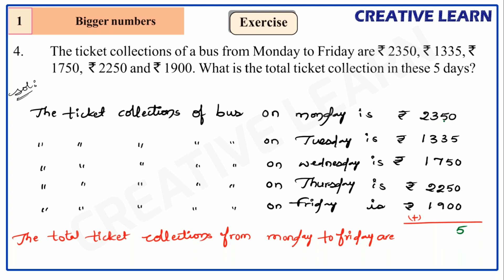In the tens place: five plus three is eight, eight plus five is thirteen, thirteen plus five is eighteen. Eighteen means write eight here and carry one. Then one plus three is four, four plus three is seven, seven plus seven is fourteen, fourteen plus two is sixteen, sixteen plus nine is twenty-five — write five here and carry two. Now two plus two is four, four plus one is five, five plus one is six, six plus two is eight, eight plus one is nine.